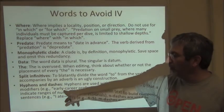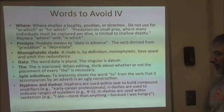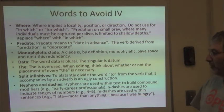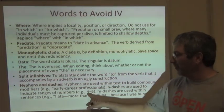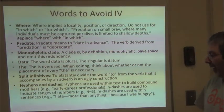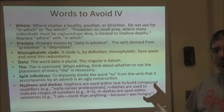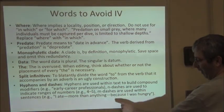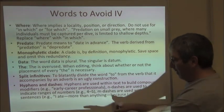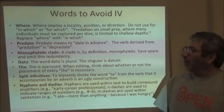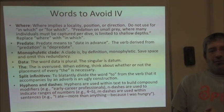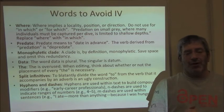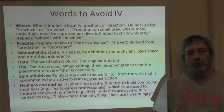Hyphens are used to build compound modifiers. The short dashes called en dashes are used to indicate ranges of numbers, like 'four to five.' The longer em dashes are used to subset sentences — like 'I ate more than anything because I was hungry.' That was a whole set of suggestions you can use to improve your written English.